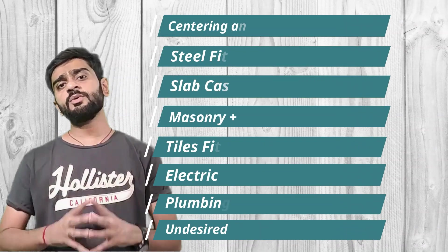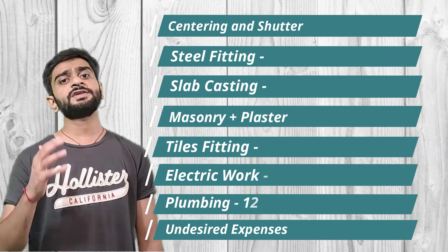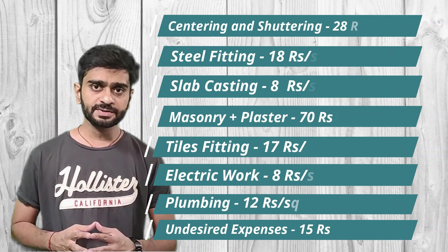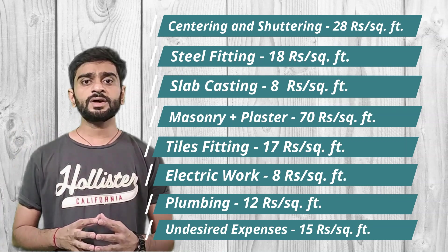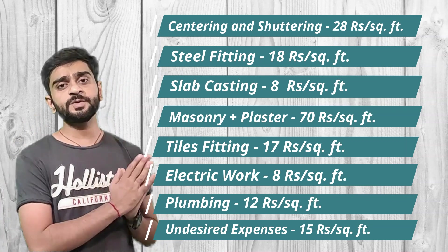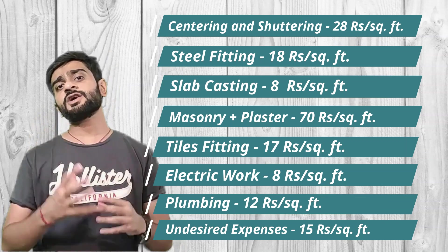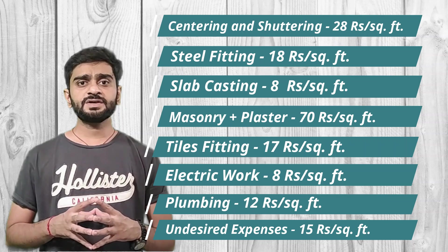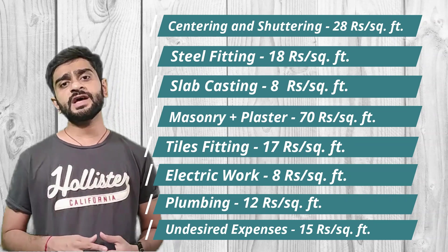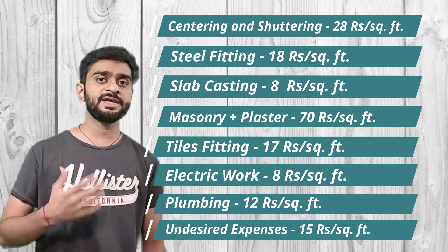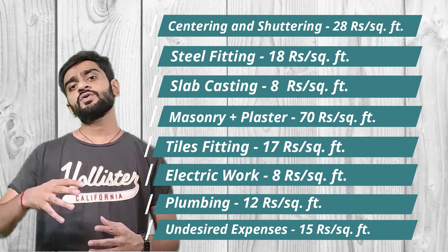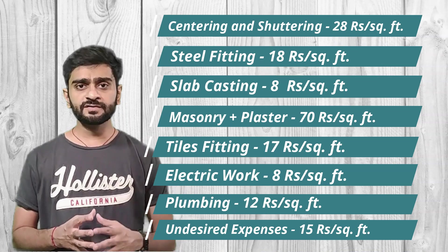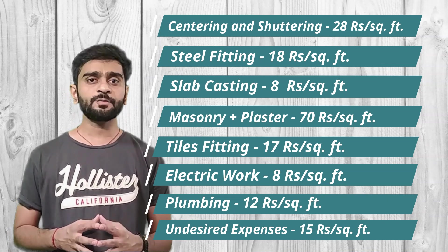First, centering and shuttering work costs 28 rupees per square feet for labor. Steel fitting work is 18 rupees per square feet. Labor work for casting of the slab is 8 rupees per square feet. The combined labor work for masonry and plaster is 70 rupees per square feet. Tiles fitting on average is 17 rupees per square feet. All electrical works are 8 rupees per square feet.